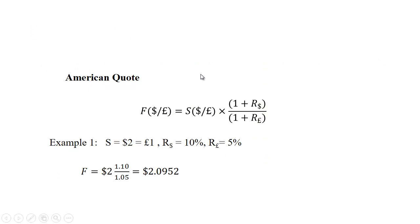So here's the condition for interest rate parity using an American quote. The forward rate dollars per pound, F($/£), equals the spot rate dollars per pound, S($/£), times (1 + R$) divided by (1 + R£). So the number of dollars it takes to buy a pound times one plus the U.S. rate divided by one plus the pound interest rate.